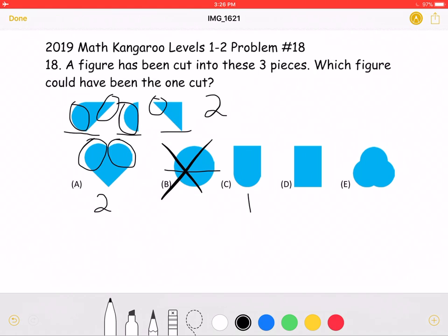In answer choice C, we have one curved side, so that's not right. In D, we don't have any curved sides. And in E, we have three curves. So that's not right either.